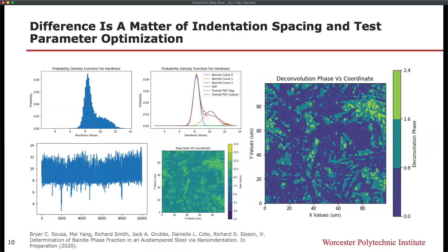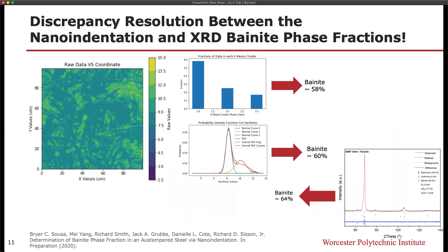This was found to be a matter of indentation spacing and test parameter optimization. Another attempt at applying nanomechanical mapping was pursued, wherein indentation spacing was brought closer together in accordance with recent findings by Dr. Warren Oliver on the fundamental limit of spacing as a function of indentation depth, such that more than 10,000 indents were collected in a 100 micron by 100 micron grid. This resulted — whether k-means clustering or probability density function deconvolution was used — in about 60% bainite concentration in the five-minute austempered sample, which is much more agreeable with the bainite percentage quantified using XRD analysis.